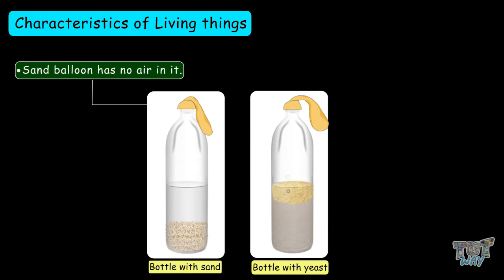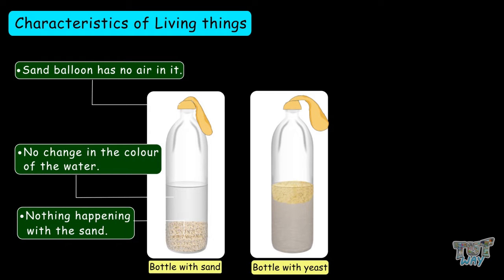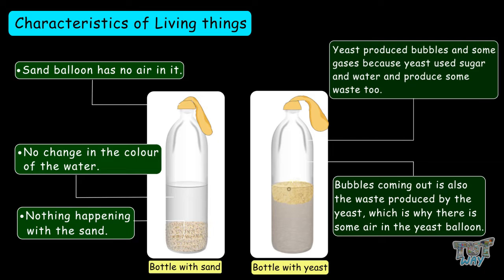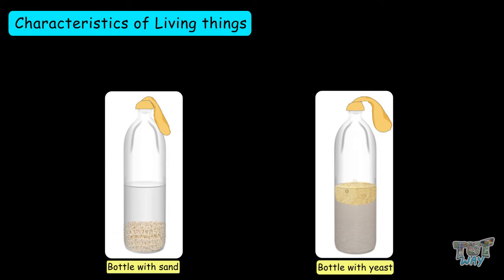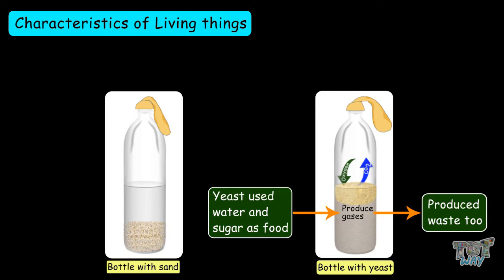Now, let's study these changes. The sand balloon has no air in it — there is no change in the color of the water, and nothing is happening with the sand. But in the case of the yeast, the yeast produced bubbles and some gases because the yeast used sugar and water to produce some waste. The bubbles coming out is the waste produced by the yeast, which is why there is some air in the yeast balloon. It shows that as the yeast is a living thing, it respires, exchanges gases, and also used the water as food and produced waste. We can conclude that all living things use some source of food or energy and also release some gases and waste.